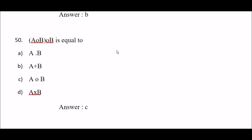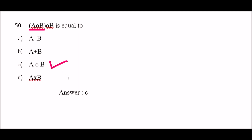Next question: A∘(A∘B) is equal to — option A: A·B, option B: A+B, option C: A∘B, option D: A×B. The right answer is option C — A∘B. So A∘(A∘B) is equal to A∘B.